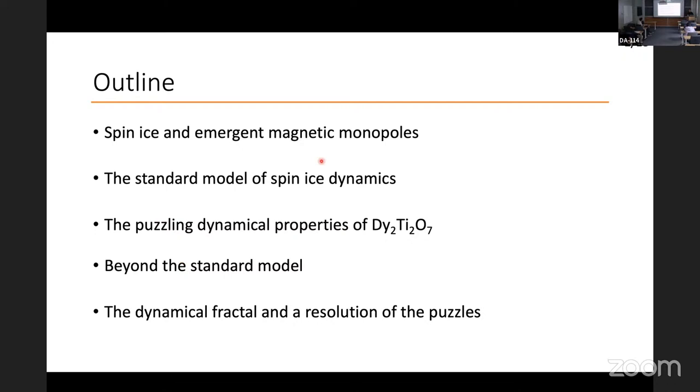So we'll start by introducing spin ice and the famous emergent magnetic monopoles that are the coarse particle excitations in the system. We'll then look at the conventional way of modelling spin ice dynamics, as we have called the standard model. We will discuss the puzzling experimental results on dysprosium titanate, which is one of the conventional classical spin ice materials. We'll then introduce a new type of dynamics that I will try to motivate, find that this actually resolves two puzzles, and that it does this because it introduces dynamical fractals in spin ice.